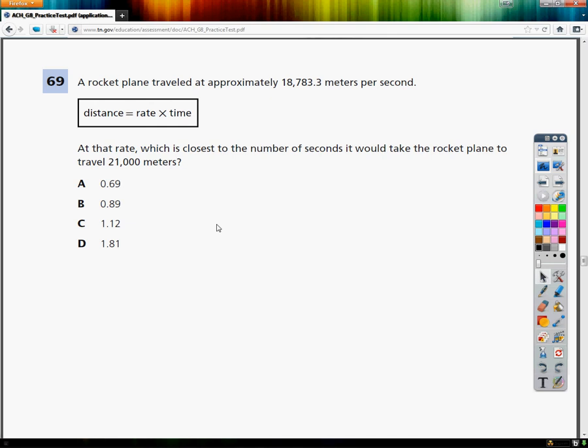A rocket plane traveled at approximately 18,783.3 meters per second. At this rate, what is the closest to the number of seconds it would take the rocket plane to travel 21,000 meters?